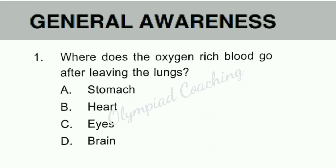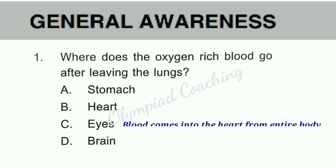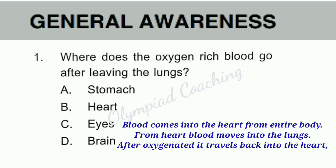Now let us discuss the questions. General Awareness. Question number 1: Where does the oxygenated blood go after leaving the lungs? Blood comes into the heart from the entire body, and from the heart, blood enters the lungs to be oxygenated. Once again, oxygenated blood from the lungs travels back into the heart, and then from the heart, blood passes into all parts of the body. So option B is correct — Heart. Oxygenated blood goes into the heart after leaving the lungs.